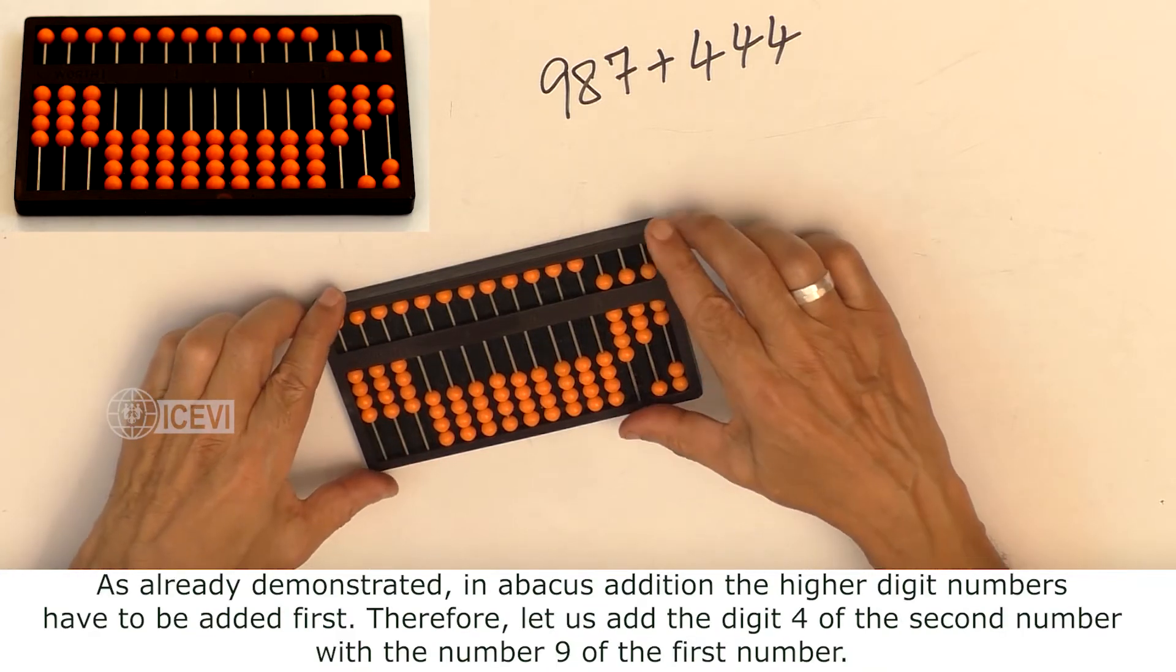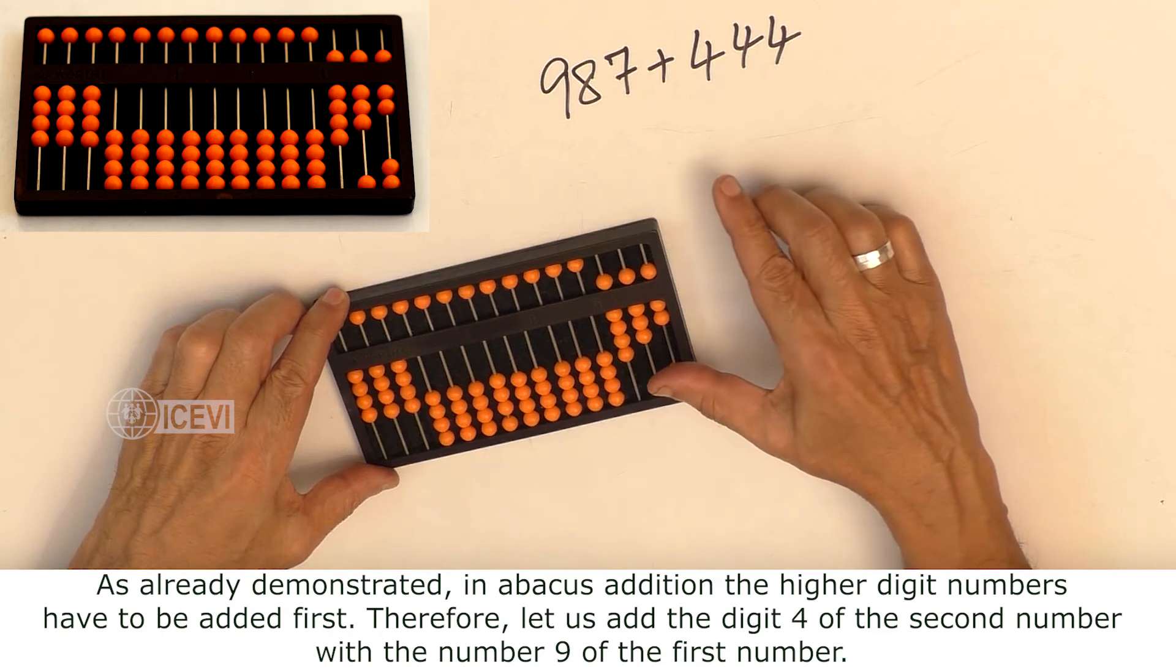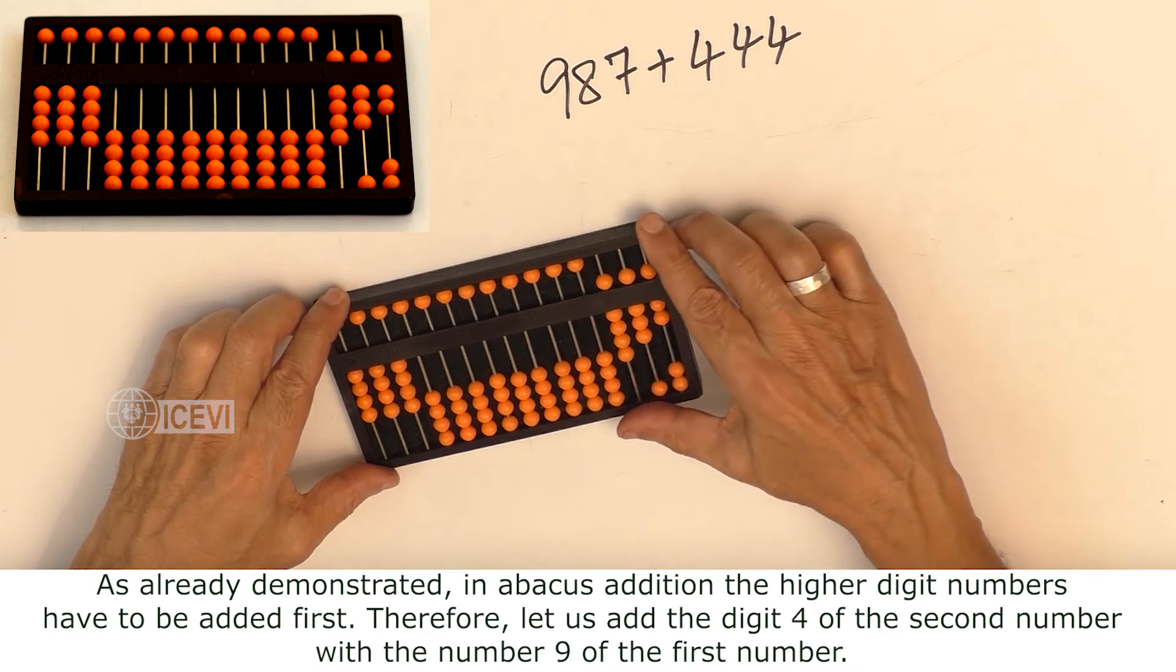As already demonstrated, in abacus addition, the higher digit numbers have to be added first.